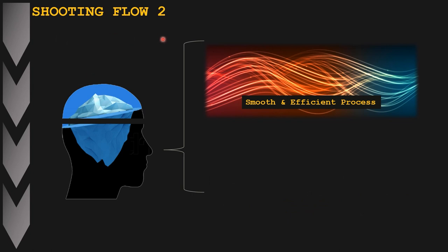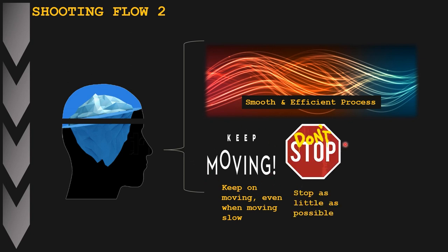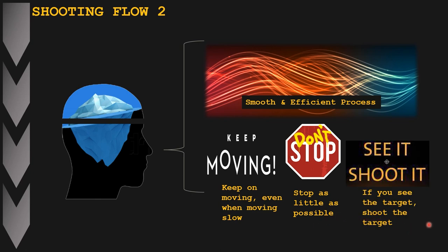We're going to build on the three previous principles by adding three new ones. The first is: keep on moving, even when moving slow. The second: don't stop — stop as little as possible. Combining both, it's better to move slow than to stand completely still on the stage. The third: if you see the target, shoot the target as quickly as you can. In the next couple of scenarios we're going to integrate and put this theory to practice.